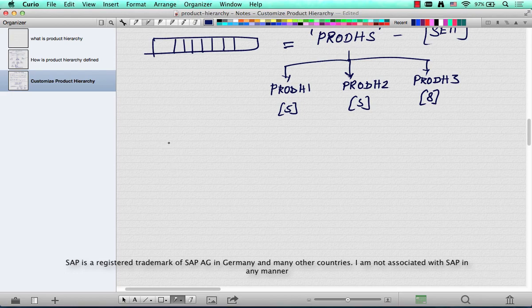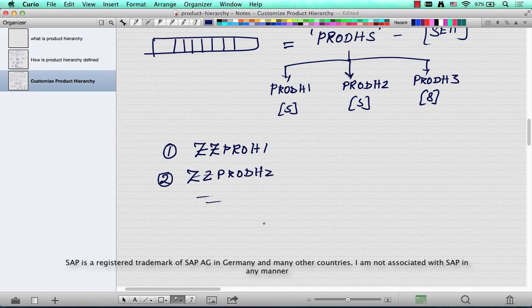Now if you want to have your own, you've got to follow a naming convention. So if it is one character, you've got to name it as ZZ PRODH1, okay? Or you can do ZZ PRODH2, right? As many as the system allows you. You only have like 18 characters, so you can only have so many.